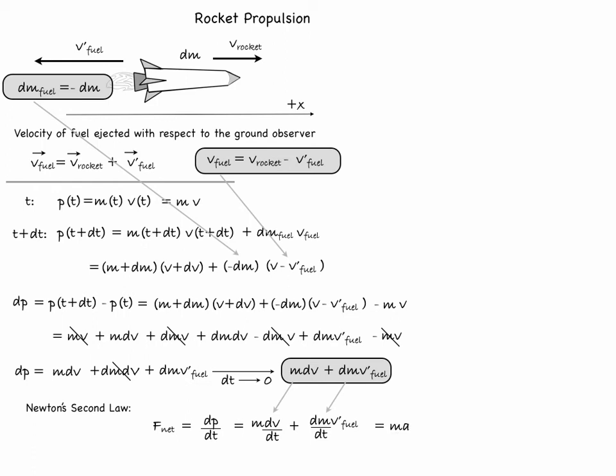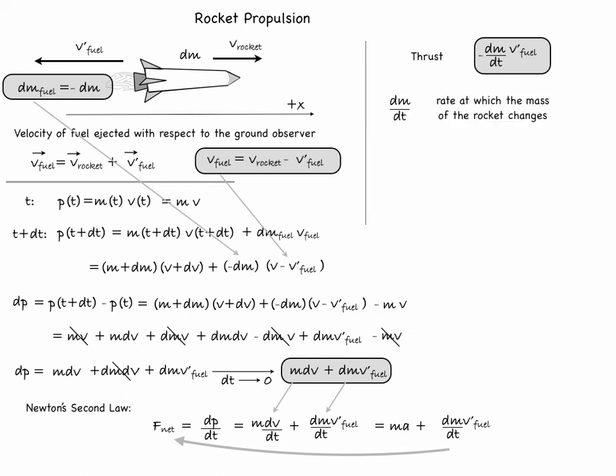Here the first term is our usual ma and the second term is actually usually moved on the left hand side, on the side of the forces, and defined as thrust: minus dm/dt times v'_fuel. Here a reminder that dm/dt is actually the rate at which the mass of the rocket changes while v'_fuel is the relative speed or how fast the fuel is being ejected relative to the rocket.